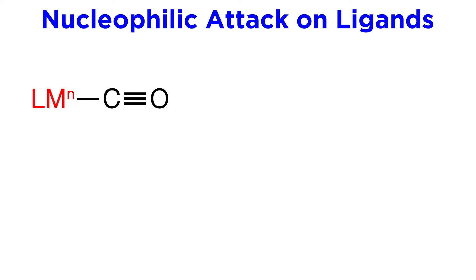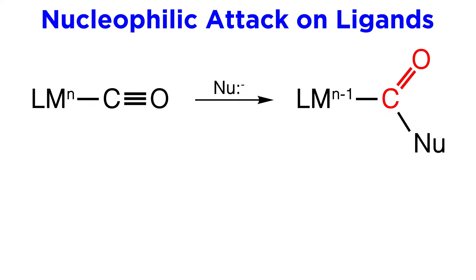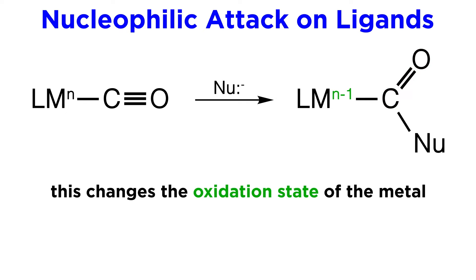First, some ligands may be susceptible to nucleophilic attack. Take for example this generalized complex with a carbonyl ligand. Some external nucleophile may attack the carbonyl carbon, just as we are familiar with from organic chemistry, which will leave us with this more familiar looking version of the carbonyl. In doing so, electron density has been pushed onto the metal, so it will exhibit an oxidation state that is one lower as a result of the reaction.